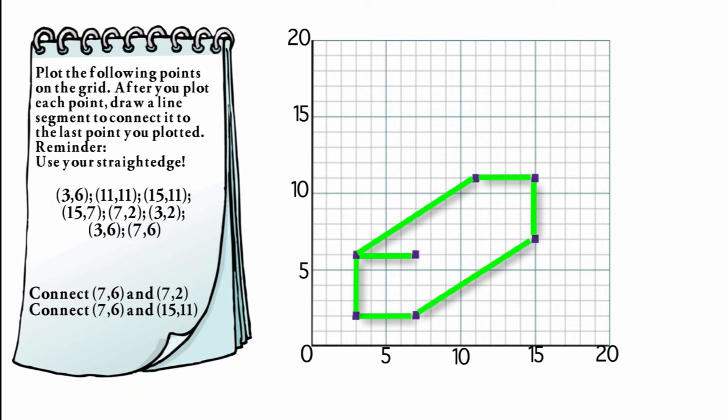Now they're asking us to draw a line segment connecting (7,6) and (7,2). (7,6) is already graphed for me. I'm going to locate it by going over 7 and up 6. And (7,2) is already graphed for me. I'll locate that dot by going over 7 and up 2. And I'll connect those two coordinates as they asked me to do.